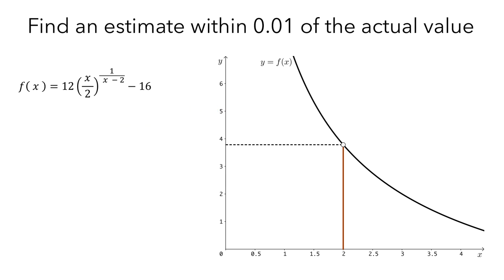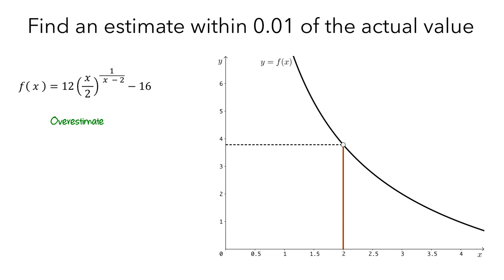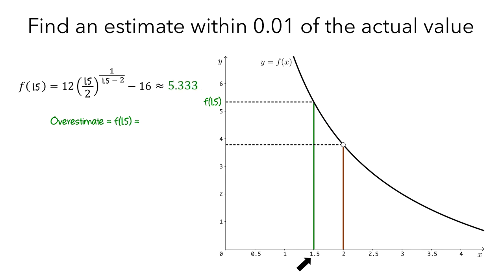Say we want to estimate the height of the hole to within 0.01 of the actual value. To start, let's find an overestimate to the height of the hole. We can see that f is decreasing, so evaluating f using values of x less than 2 will yield overestimates to the height of the hole. So let's pick x equals 1.5. The length of this green line segment is f of 1.5. When we evaluate f at 1.5, we get 5.333.